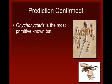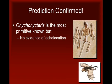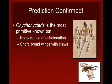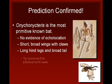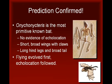This prediction was confirmed by the discovery of Onychonycteris, the most primitive known species of bat, discovered in Wyoming and embedded in rocks that are around 50 million years old. Onychonycteris had an underdeveloped inner ear that suggests it was unable to echolocate. It also had short, broad wings with claws on all five fingers, longer hind legs, and a broader tail than modern bats. This evidence indicates that flying evolved first and echolocation evolved later.